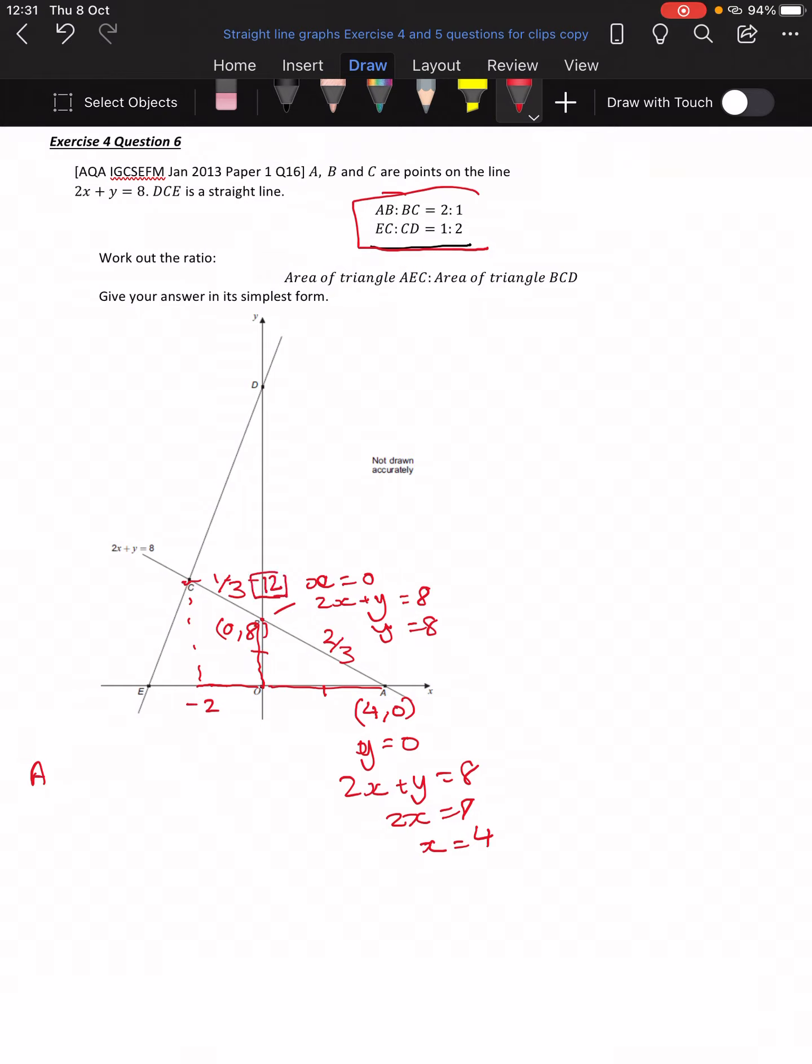So I'm just going to make a note of some of the points that we already have, because it's getting a bit messy already. So A is 4, 0. B is 0, 8. C is, we've now worked out to be minus 2, 12. So we're nearly there.